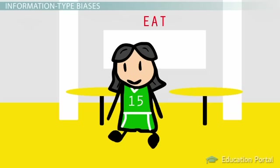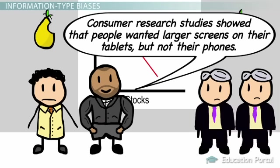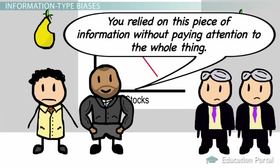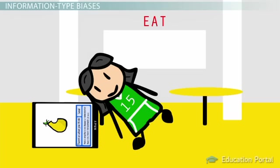For example, Pair Products gave the go-ahead to two new phones that had large screens. Consumer research studies showed that people wanted larger screens on their tablets, but not their phones. Pair Products relied on this piece of information to design their new phones without paying attention to the whole thing. The end result was that consumers felt the phones were too large and cumbersome and sales were non-existent.